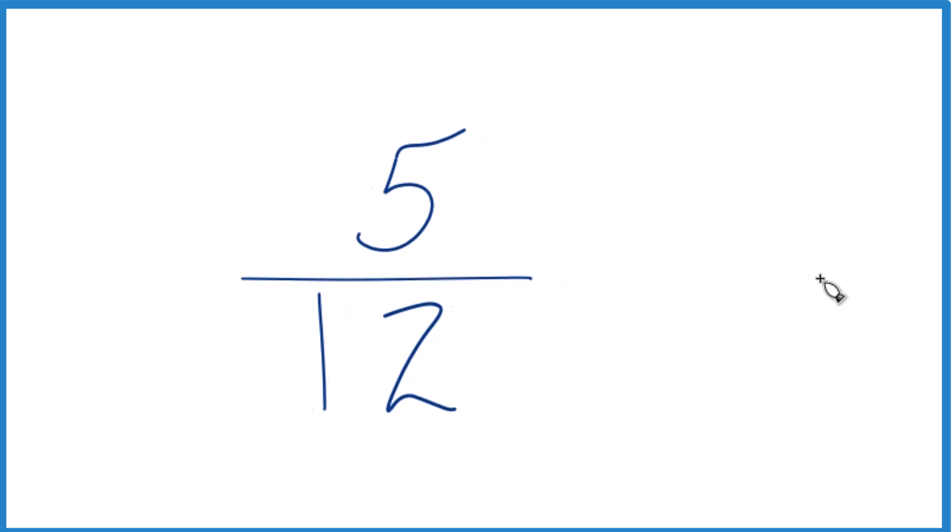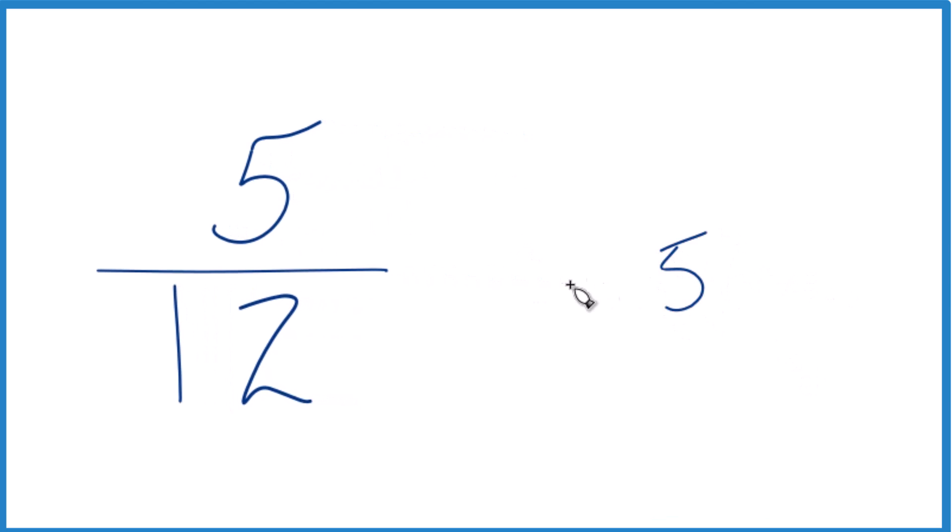You could do it on a calculator that would give you the answer, or you could take 5 and see how many times 12 goes into 5. So do it longhand. 12 doesn't go into 5, but if we put a zero and a decimal point up here, then we could call this 50.